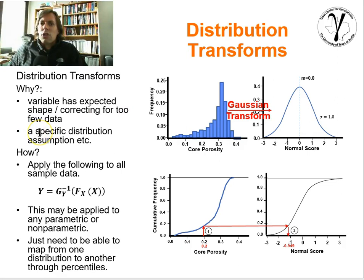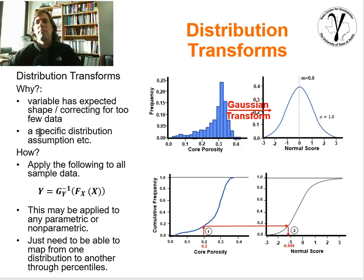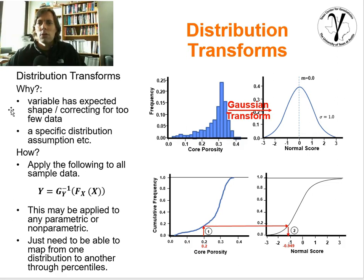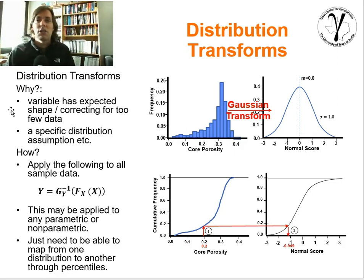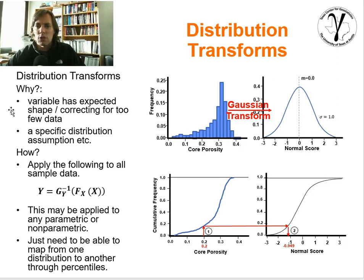The other reason is that you may be using numerical methods or workflows that require a specific distribution shape. A perfect example is the geostatistical method of sequential Gaussian simulation, which requires that the variable is Gaussian distributed in order to perform the simulation. So we transform to Gaussian, complete the sequential simulation workflow, and then afterwards back-transform from the Gaussian distribution back to the original variable distribution. There are a variety of different reasons we might want to do a distribution transform.